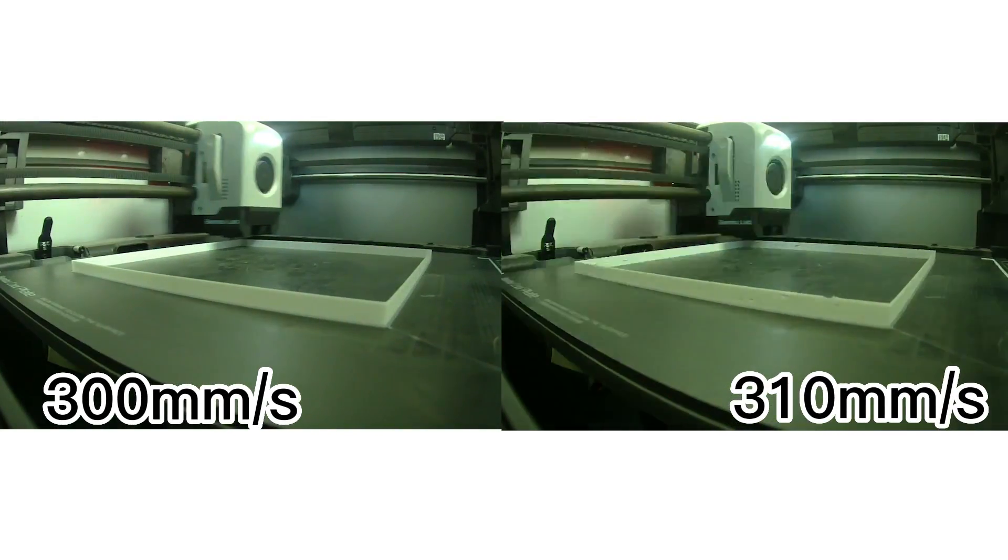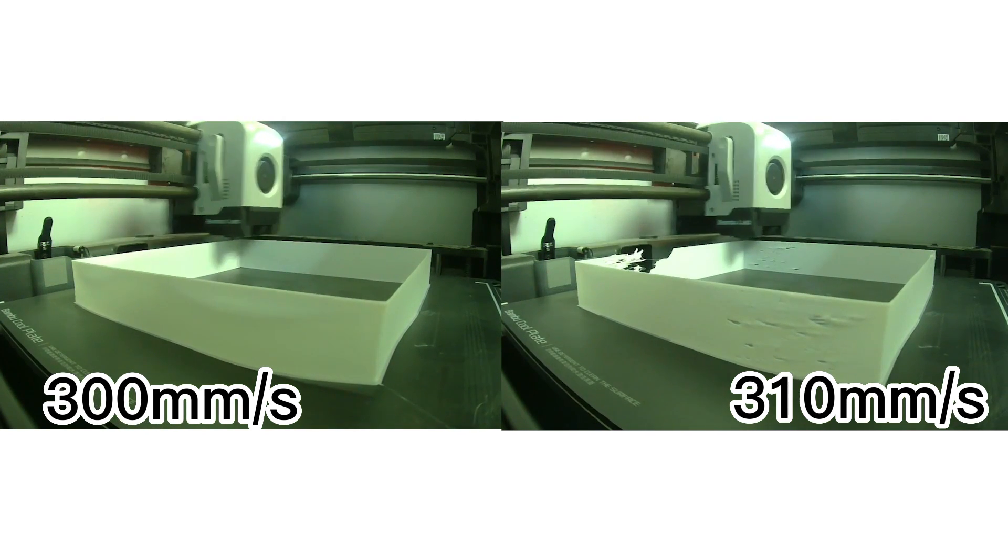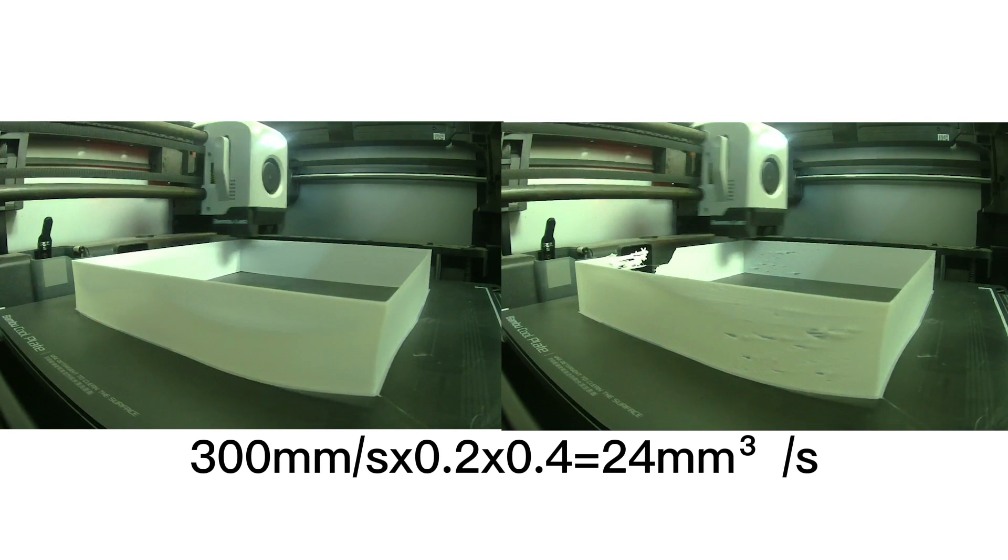So, we can conclude that the true melting speed of the Bamboo X1 is around 300 millimeters per second, and the volume flow rate of the Bamboo X1 is calculated to be about 24 millimeters to the third power per second, according to the volume flow formula.